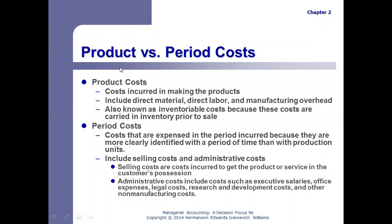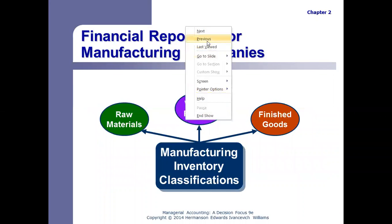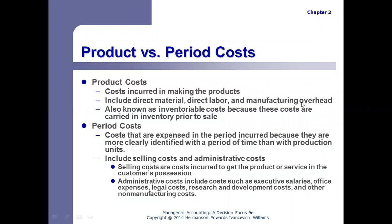This concept of product versus period costs: product costs are those incurred in making the product — direct materials, direct labor, and manufacturing overhead. Period costs are selling costs and administrative costs — these are costs incurred by the company as a whole that are not part of making the product.